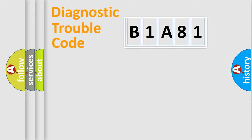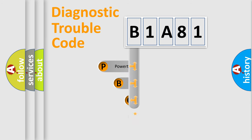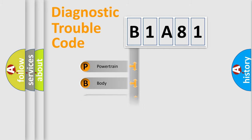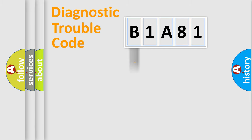Let's do this. First, let's look at the history of diagnostic fault code composition according to the OBD2 protocol, which is unified for all automakers since 2000. We divide the electric system of automobile into four basic units: Powertrain, Body, Chassis, and Network.